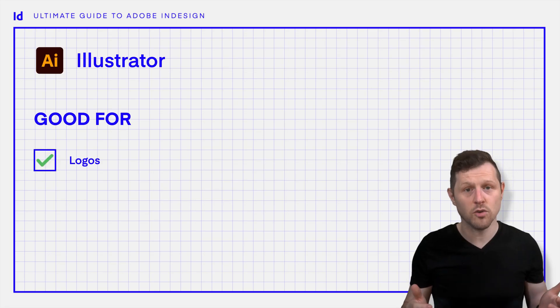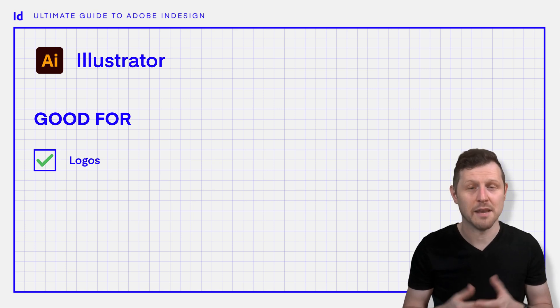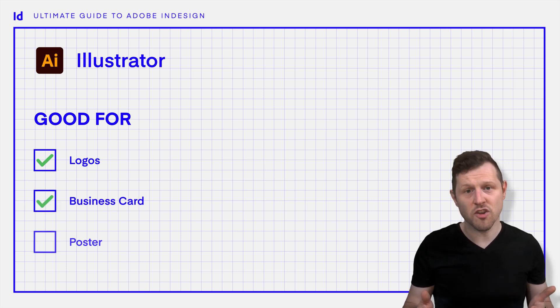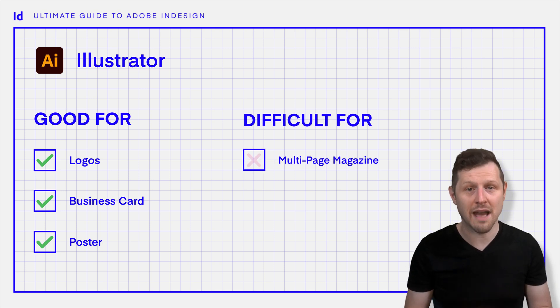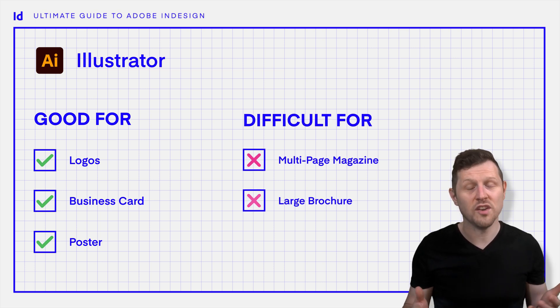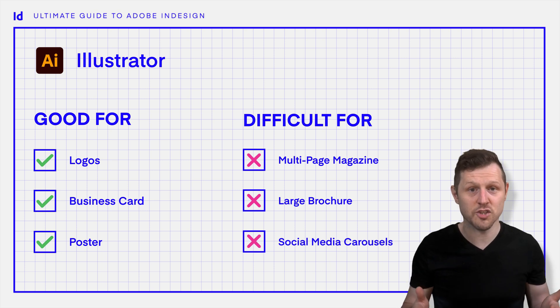InDesign is built specifically for those types of projects, with features like parent pages, text flow, and paragraph styles that make handling multi-page documents a breeze. So if you're designing a logo or a simple document like a business card or a poster, Illustrator can be a suitable choice. But if you need to design a 20-page magazine, a corporate brochure, or even a social media carousel with lots of text, pages, images, and styles, you'll save yourself a ton of time and headache by using InDesign.